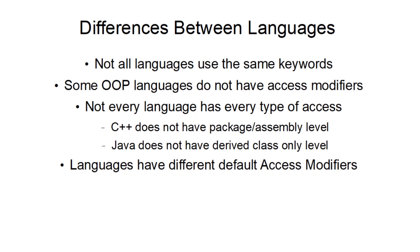Not every language is going to have all the types. C++ doesn't have package or assembly level, and Java doesn't have only-derived-classes access — in Java it's derived classes and package together. Languages also have different default access modifiers; sometimes it's public, sometimes it's protected, it just depends on the language. And not all OOP languages have access modifiers. For example, Python uses naming conventions to signal 'don't access this method unless you're part of this class.'